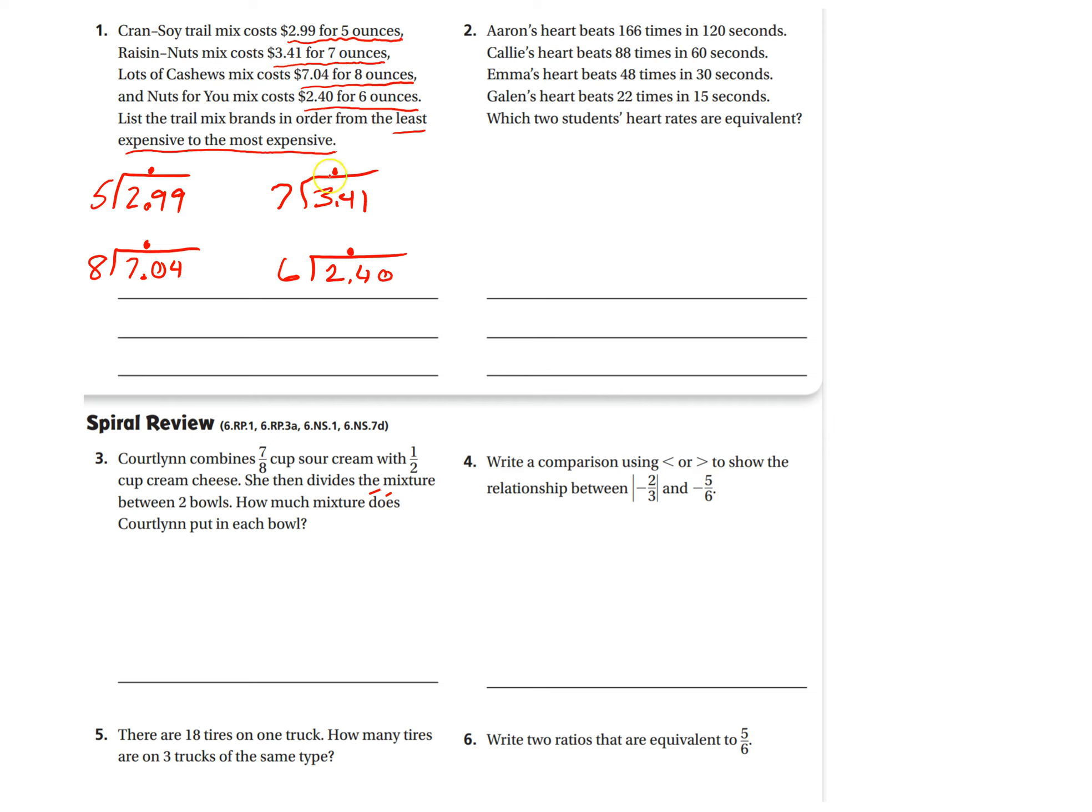And then, once you get these answers, you're going to compare these answers and see which one is the least. And that will tell you which brand is the least amount per ounce. And the biggest number from these answers is going to tell you which brand is the most expensive. Okay, number two. Same idea. Aaron's heart beats 166 times in 120 seconds. Cali's in 88 times in 60, 48 in 30, 22 in 15 for Galen. And then which two students' heart rates are equivalent.